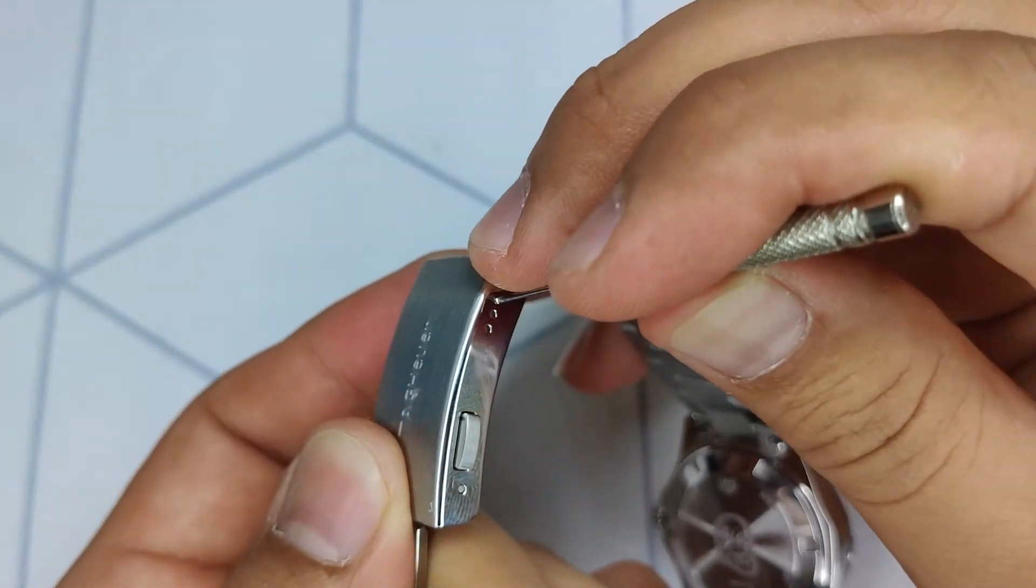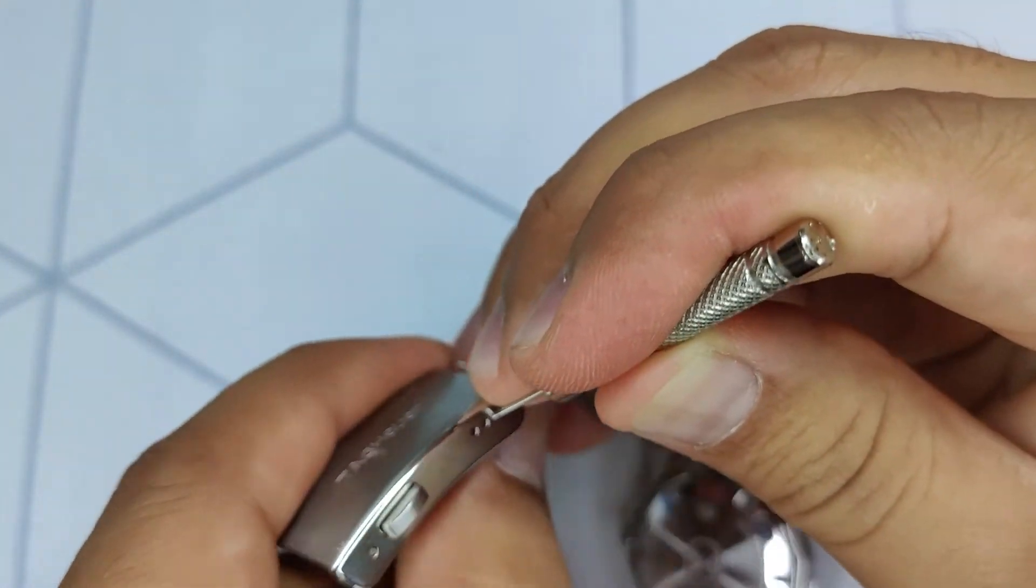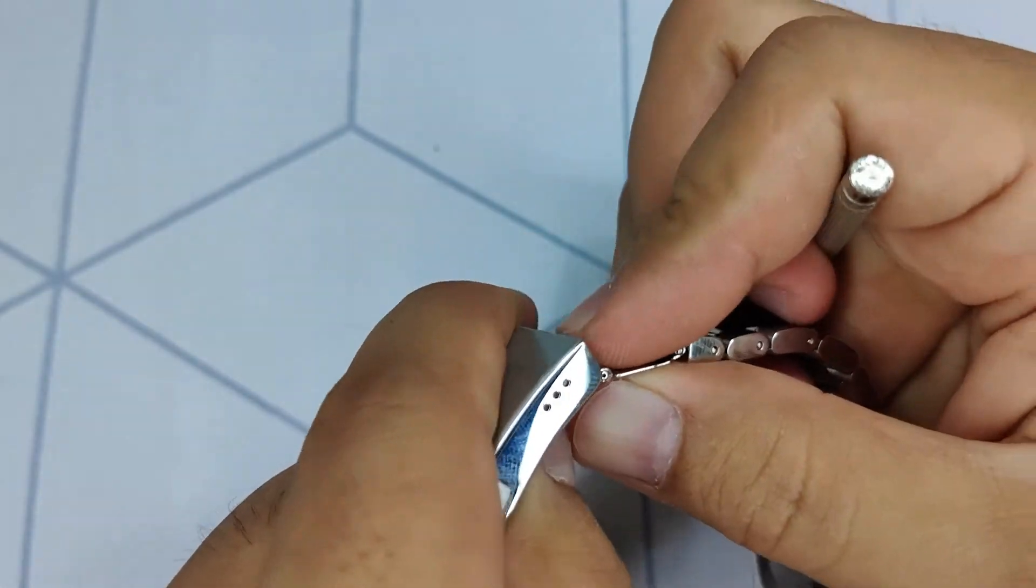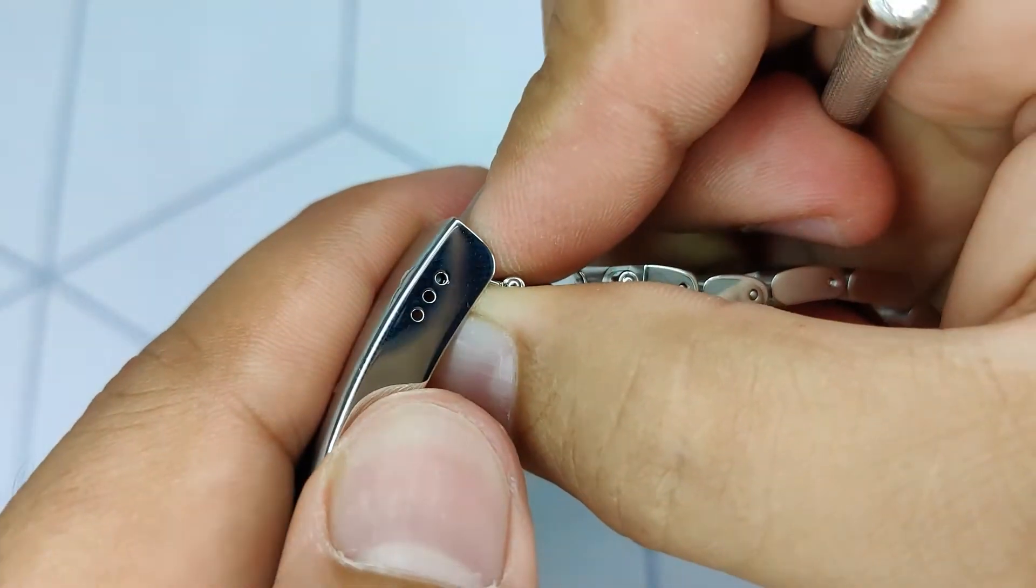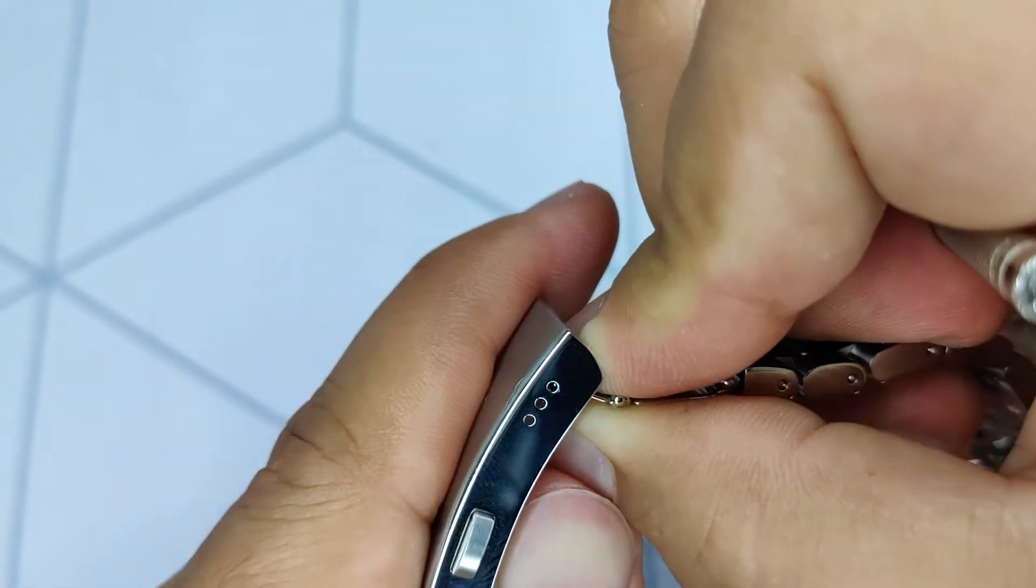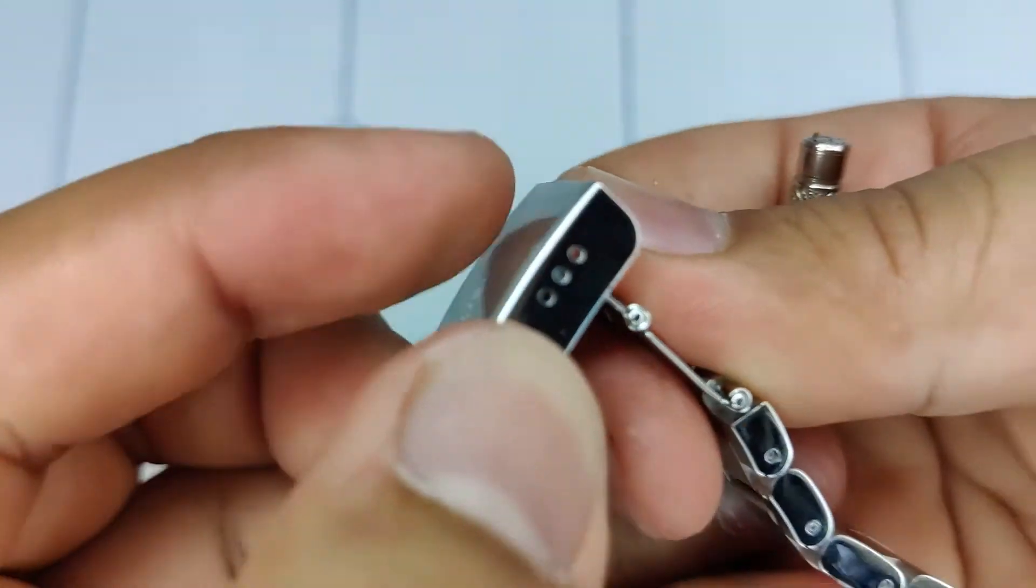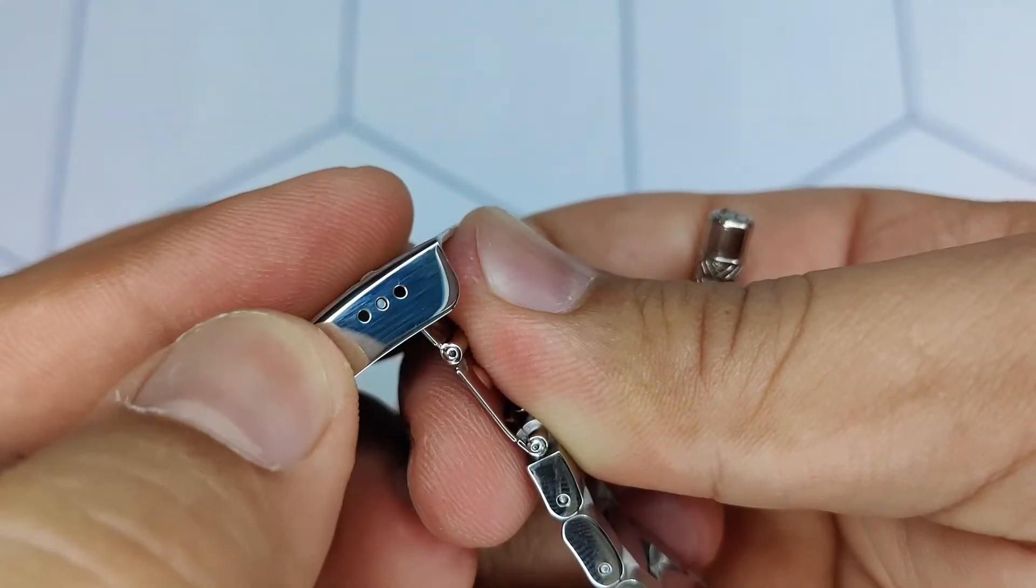Push the spring pin with a pin pusher until it can move freely. Move the spring pin carefully to the next micro hole. Do the same process on the other side until you get the desired fit.